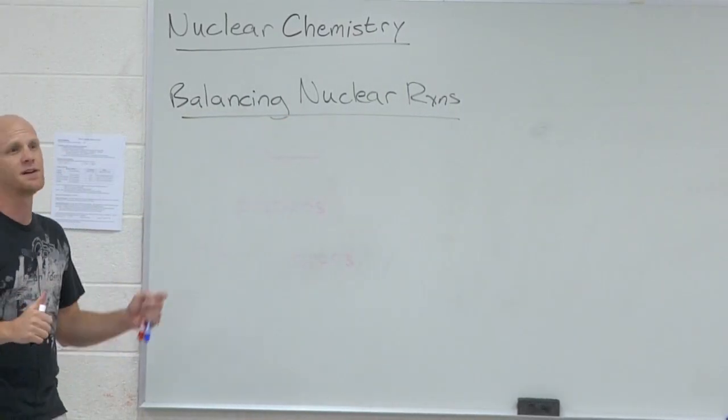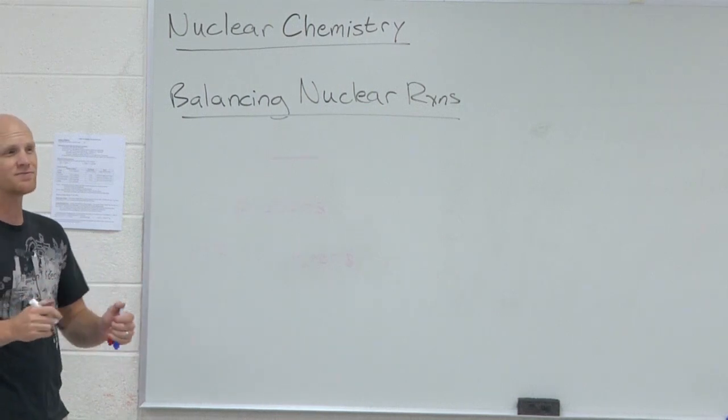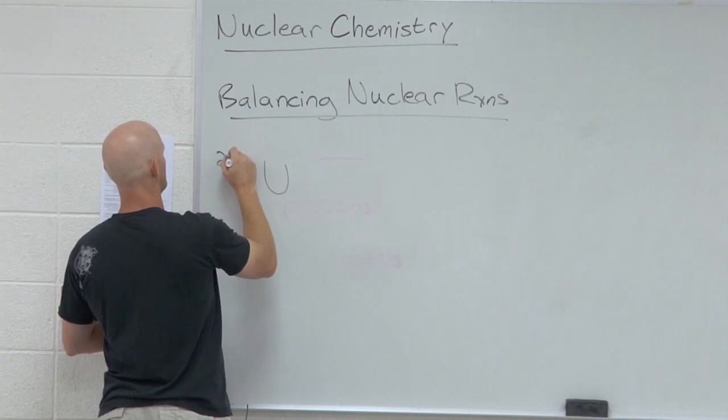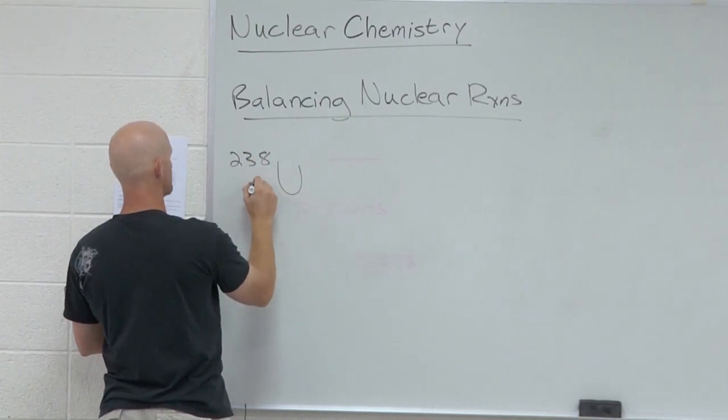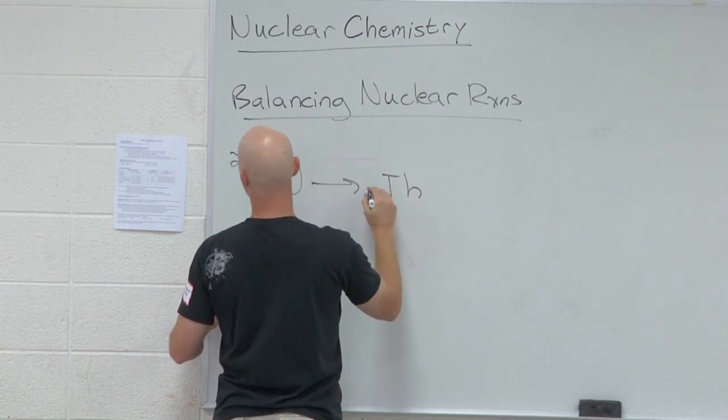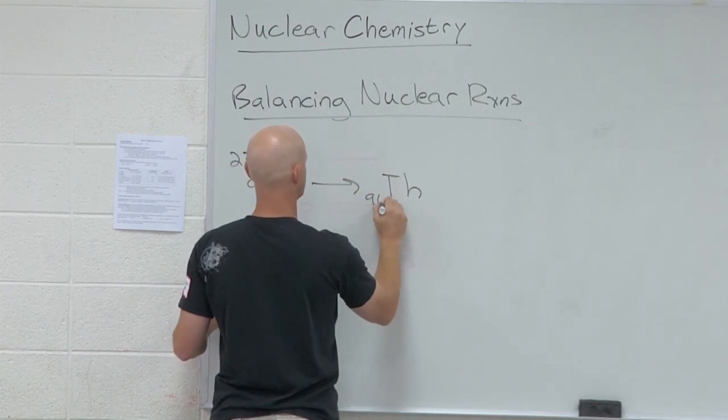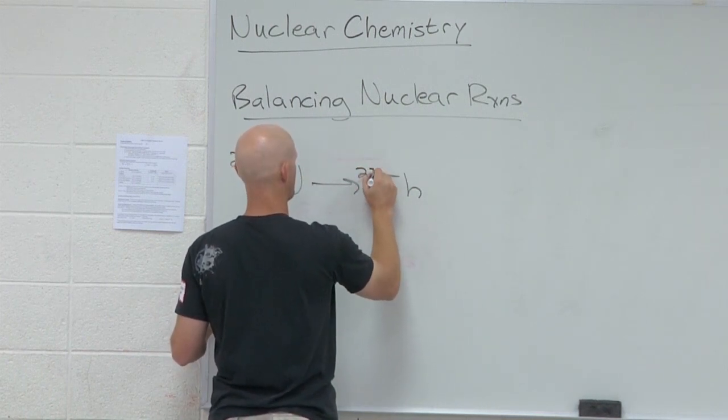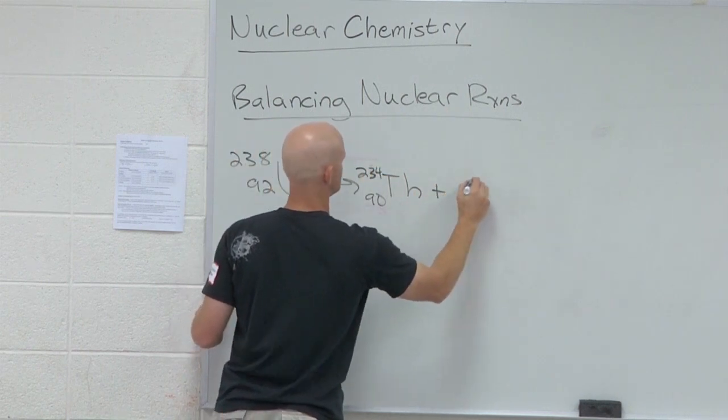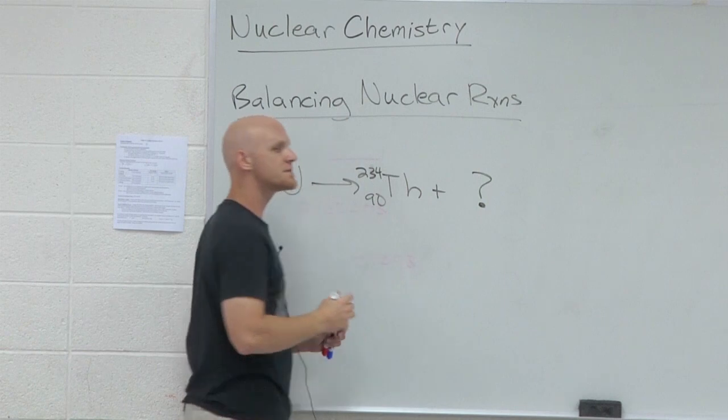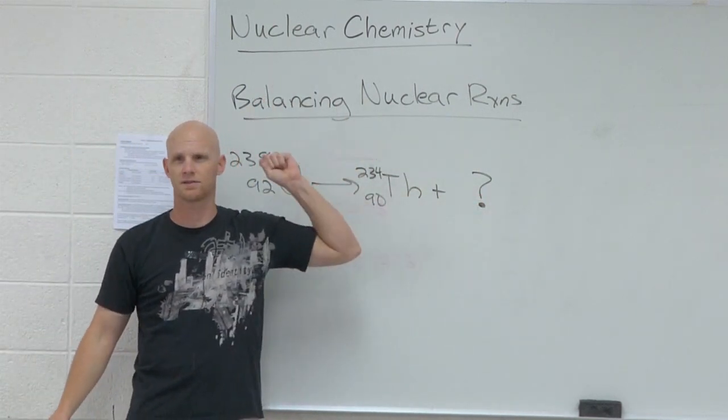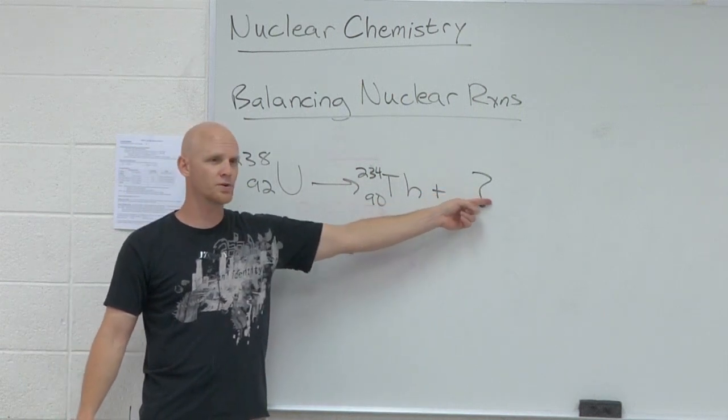All right, balancing nuclear reactions. Balancing nuclear reactions is actually fairly easy. We're going to do a couple examples here. So these are right on your handout there. U-238-92 turning into thorium-90-234 plus a big question mark. And the question here is just what is the product? What is this other particle that we see in the products?